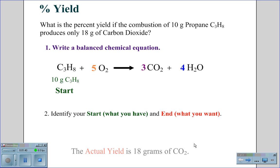Since the actual yield is 18 grams of CO2, our endpoint needs to be the same, and therefore we are going to search for grams of CO2. This will be our endpoint for our stoichiometry.